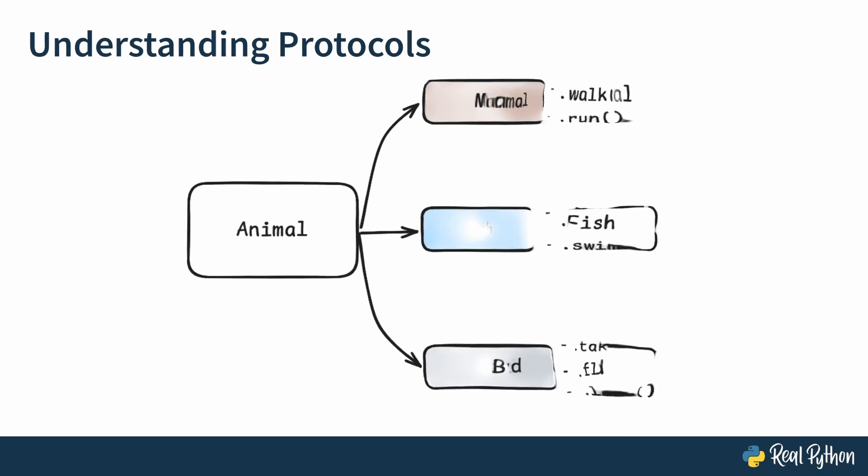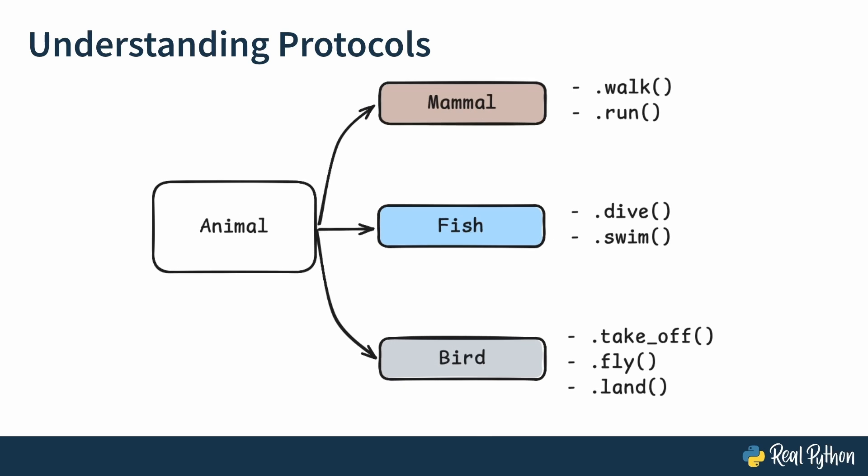And then you might think, alright, for mammals I will define methods that allow mammals to walk and to run. And fish will know how to dive and to swim. And birds will know how to take off and fly and land. And so you're associating methods related to movement to each of these three classes, which will in turn have different animal species as subclasses. And this might look like a good idea, but as soon as you start thinking about concrete animal species, everything breaks off.